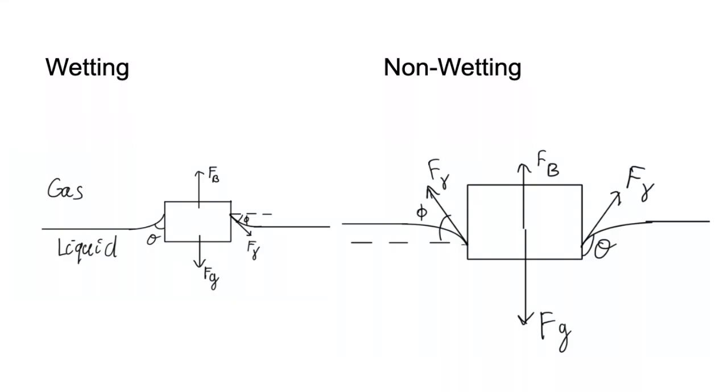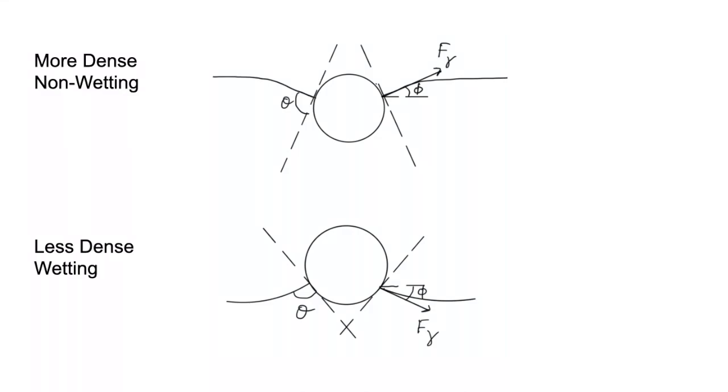Whether an object is wetting is determined by the contact angle, its geometry, and its density. This is apparent in the case of these two spheres. They have the same contact angle but due to having a higher density, one of the spheres is more submerged and therefore becomes non-wetting while the other is wetting.